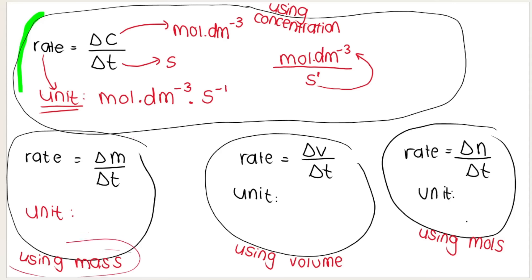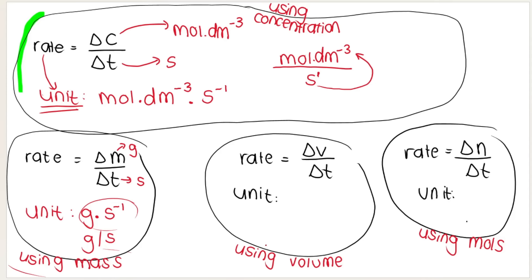What if we use mass? Mass is measured in grams and time is measured in seconds, so the unit is grams per second (g·s⁻¹). What about volume? We usually measure volume in cubic decimeters in chemistry, so the unit will be cubic decimeters per second (dm³·s⁻¹). What about moles? Moles are measured in mol and time in seconds, so the unit will be mol·s⁻¹. Be careful of the unit — it can tell you what you need to be working with in your calculation.